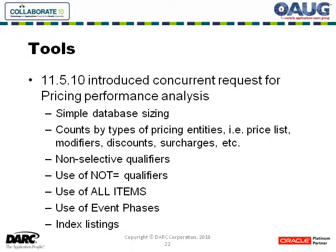It also gave some analysis of what are termed non-selective qualifiers — qualifiers that, even though they enforce rules you are required to implement, don't really provide a lot of selectivity when it comes to weeding out things that shouldn't be used. It tells you how many times you use, for example, the not-equal conditions, how many times you use the all-items product capability. The other big benefit is that at the end of this listing is a set of all the indexes that are currently defined, so this is a quick way to ascertain if you are missing anything that some of the recommended performance improvements define.